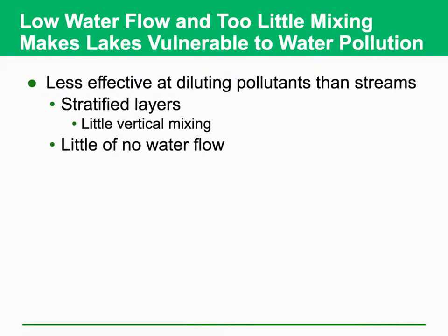When we think about water pollution, one thing we have to consider is water flow. If we have low water flow and too little mixing, water pollution becomes more serious. Low water flow and too little mixing can cause less effective dilution of pollutants. For instance, stratified layers can interrupt vertical mixing, and if the water flow rate is too low, pollutants are not diluted and that can be a problem.